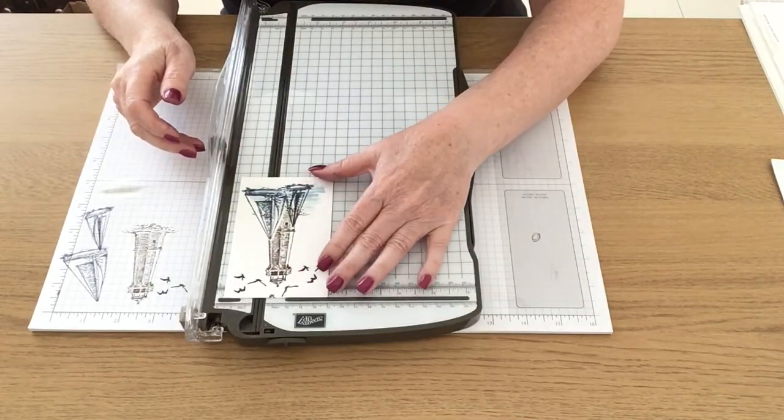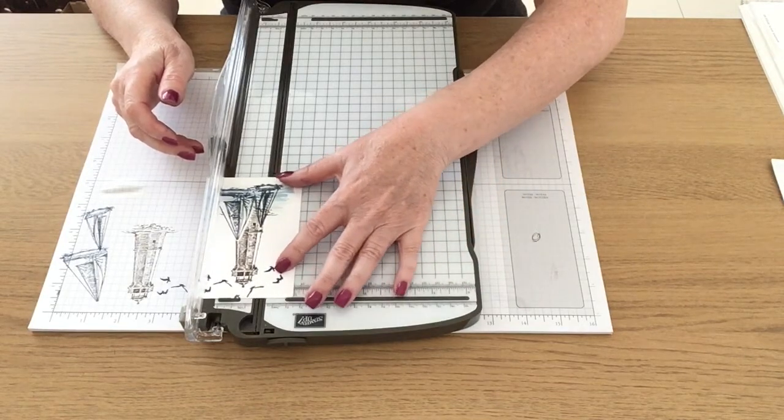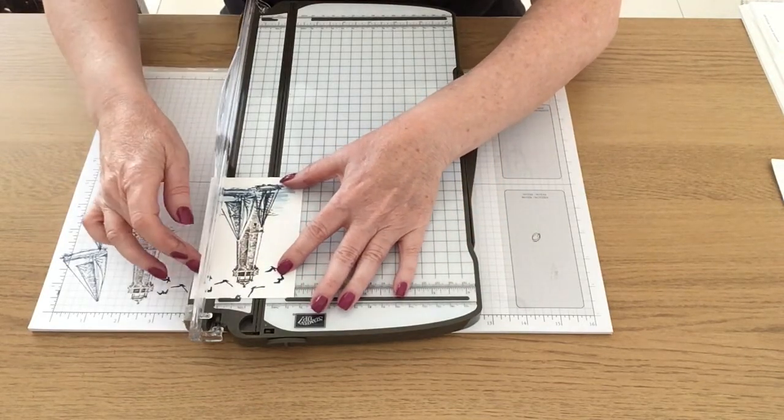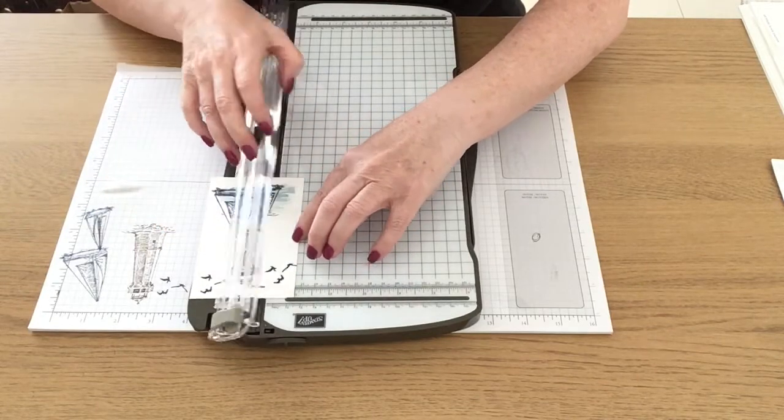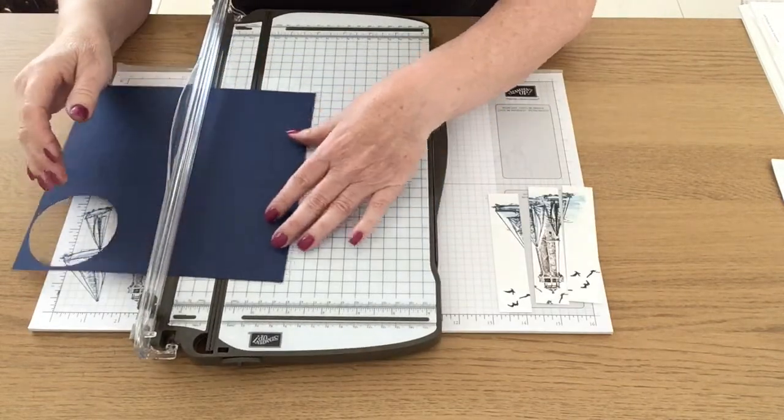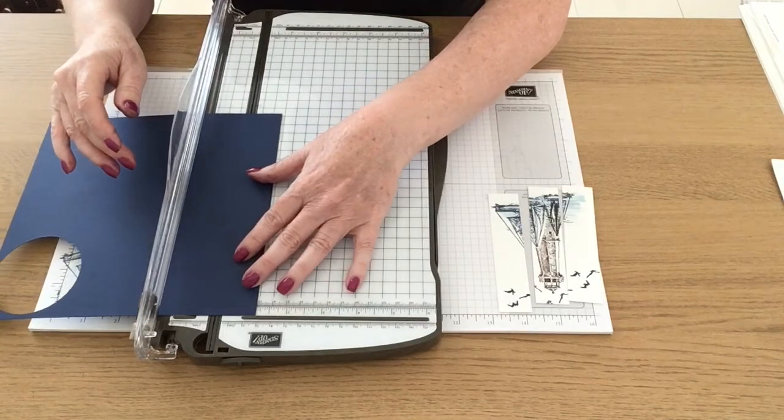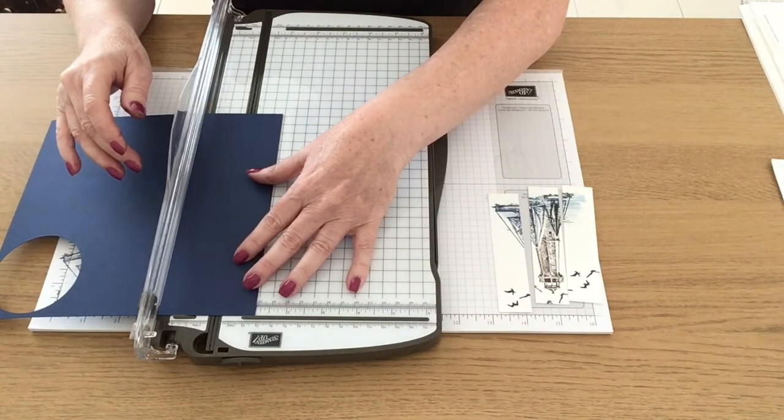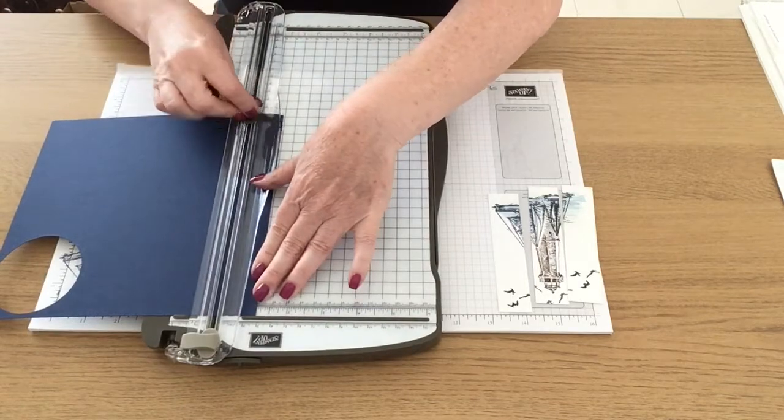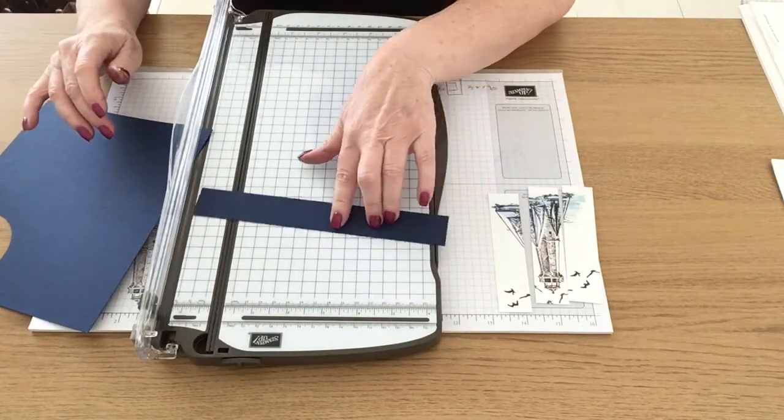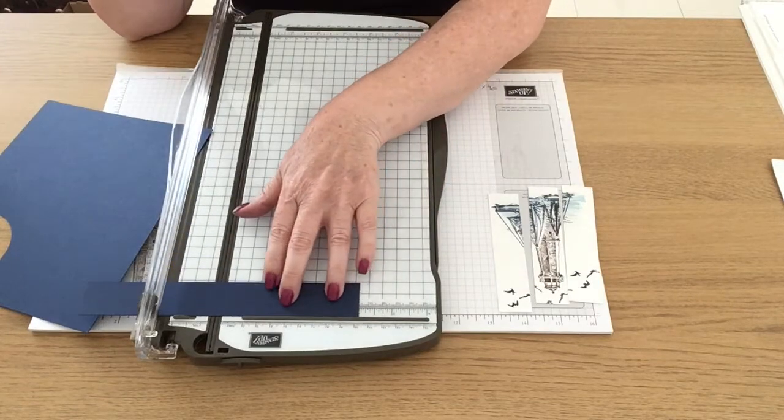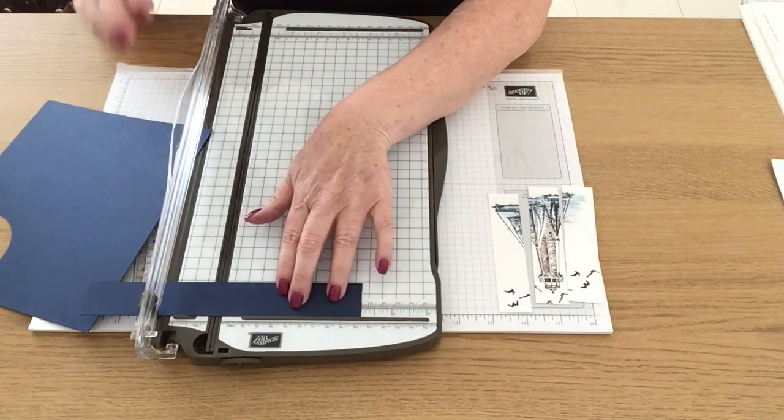Okay so now I'm going to bring in the paper trimmer and I'm going to trim this piece of card down into three one-inch strips. Now I'm going to cut three pieces of Knight of Navy which are one and one-eighth by four and five-eighths and these are going to be the matting layers for the three.